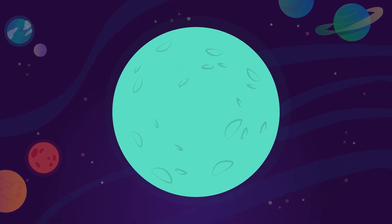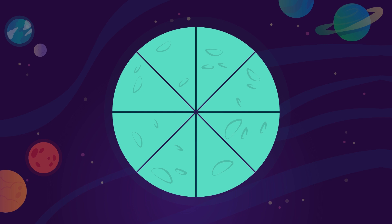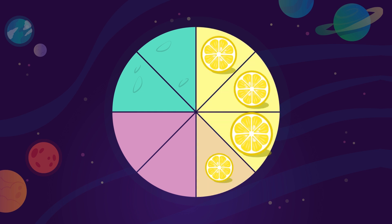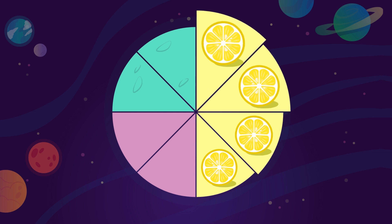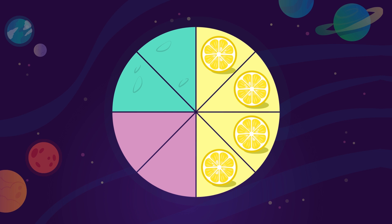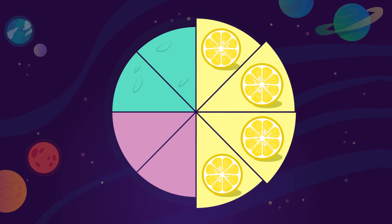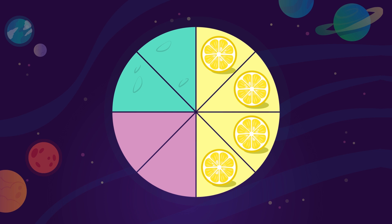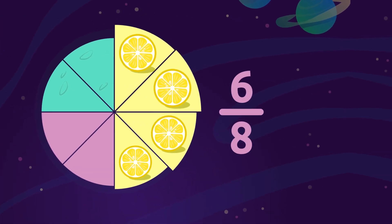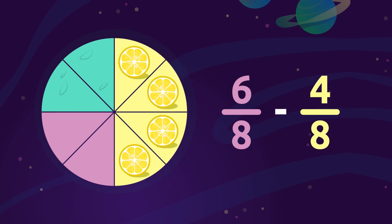In the Smile and Learn universe, there's a planet called Smiley-thon. The planet is divided into eight equal parts. In six of these eight fields they grow apple trees and lemon trees. If four of the eight fields are planted with lemon trees, how many fields are planted with apple trees? To find out, we subtract fractions: we subtract the number of lemon tree fields from the total fruit tree fields, meaning six eighths minus four eighths.